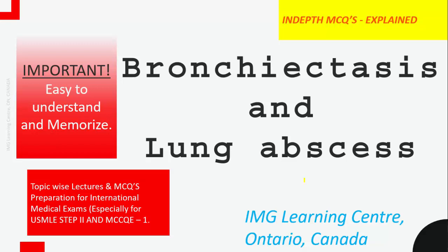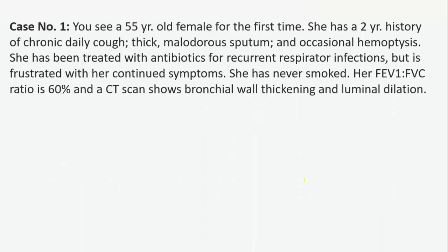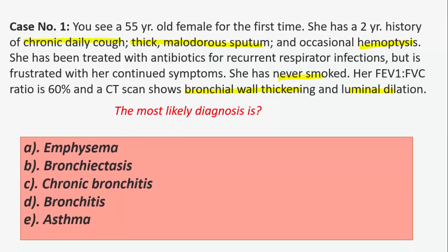Today we will discuss bronchiectasis and lung abscess in respirology. Case number one: a 55-year-old female presents for the first time with a two-year history of chronic daily cough, thick malodorous sputum, and occasional hemoptysis. She has been treated with antibiotics for recurrent respiratory infections but is frustrated with continued symptoms. She has never smoked. Her FEV1/FVC ratio is 60% and a CT scan shows bronchial wall thickening and luminal dilatation. What is the most likely diagnosis?